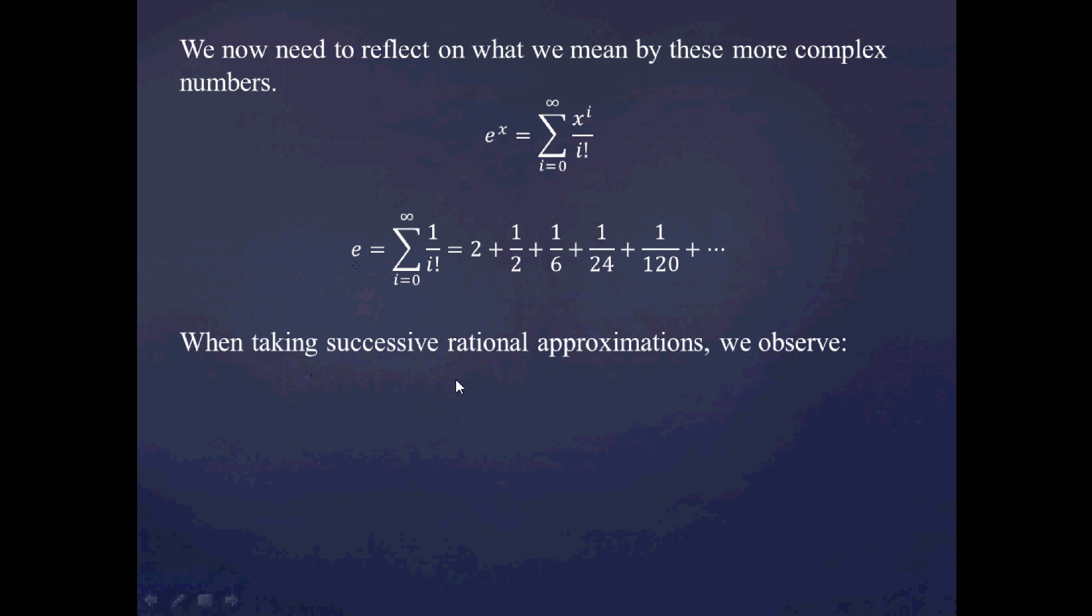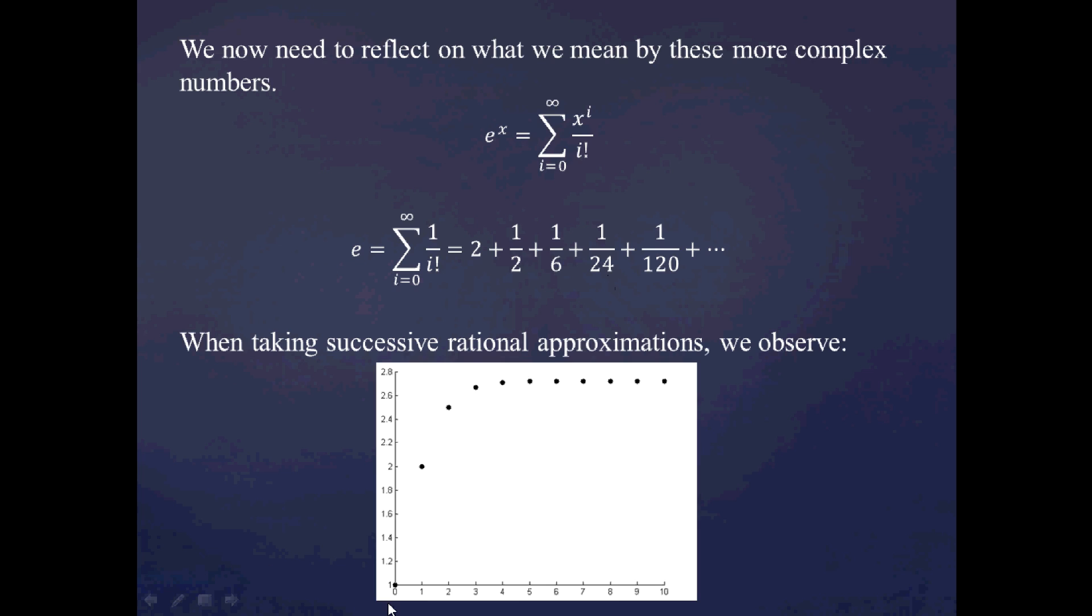And when we take successive approximations, that is, we take 2 first, and then we add on 1 half, then we add on 1 sixth, add on 1 24th, and so on, building our way up to e, graphically, this is what we observe. So, here is the 1 first, coming from 1 over 0 factorial, then we have the additional 1, coming from 1 over 1 factorial,